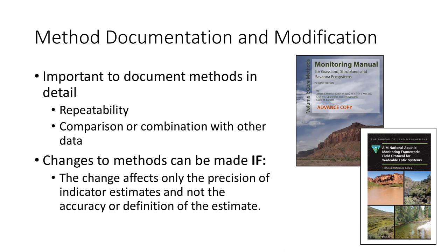You can make limited adjustments to methods to fit local needs or conditions, or to improve compatibility with another data set. However, changes can only be made that affect the precision of the indicator. Changes that would affect the accuracy of the indicator or the definition of what's being measured cannot be made, as they would compromise the ability of the data to be used or combined with other data sets. For example, we can change the number of line point-intercept pin drops along a transect because these changes only affect precision. However, changing the lower size limit of what's considered a rock versus soil affects the definition of the indicator, so it's something that cannot be done.